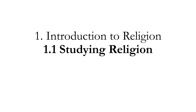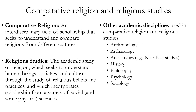Section 1.1: Studying Religion. There are two academic disciplines relevant to this class. Comparative religion is an interdisciplinary field of scholarship that seeks to understand and compare religions from different cultures. It's similar to religious studies — the only difference is comparative religion focuses on the compare and contrast between different religions. Religious studies is the academic study of religion, which seeks to understand human beings, societies, and cultures through the study of religious beliefs and practices, incorporating scholarship from a variety of social and some physical sciences.